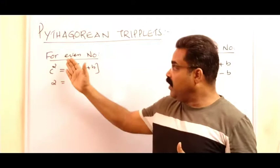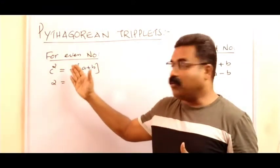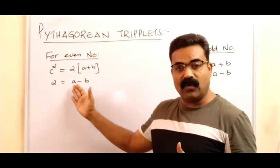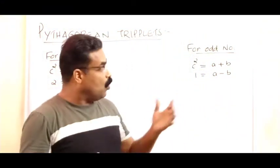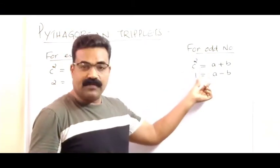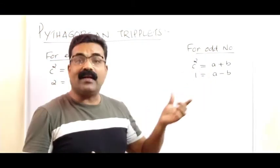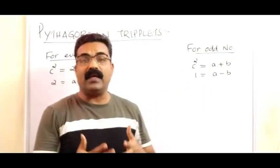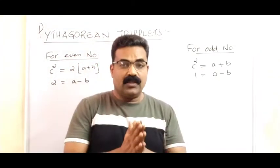If the given number is an even number, we use one formula, and if the given number is an odd number, we use a different formula to find the Pythagorean triplets.